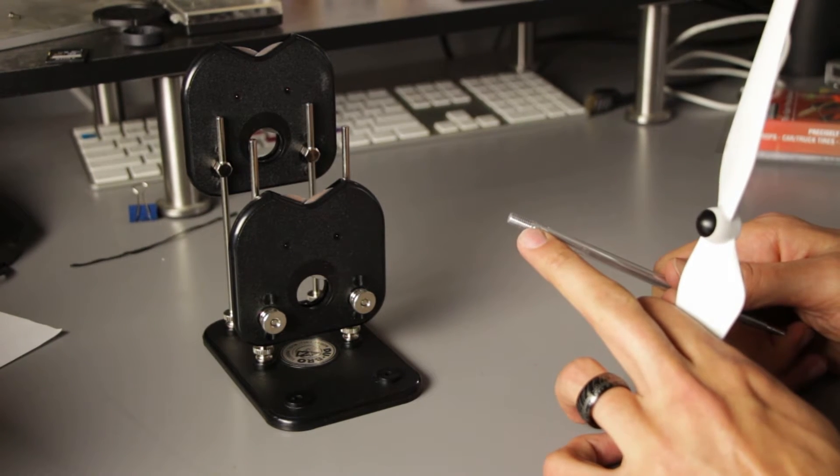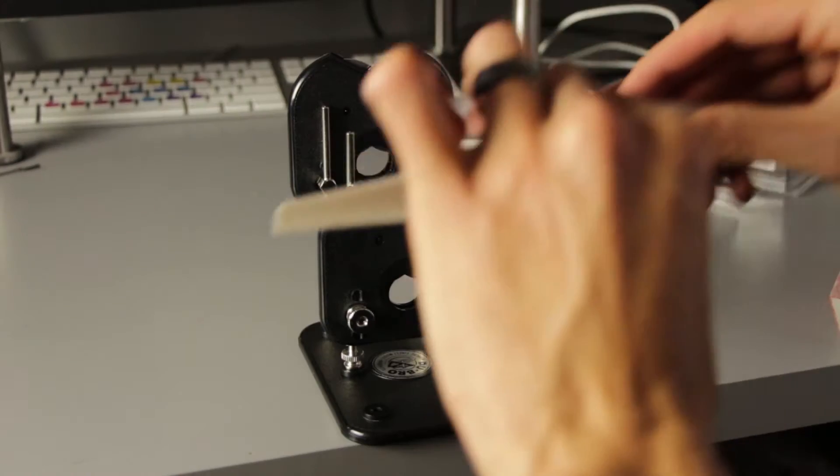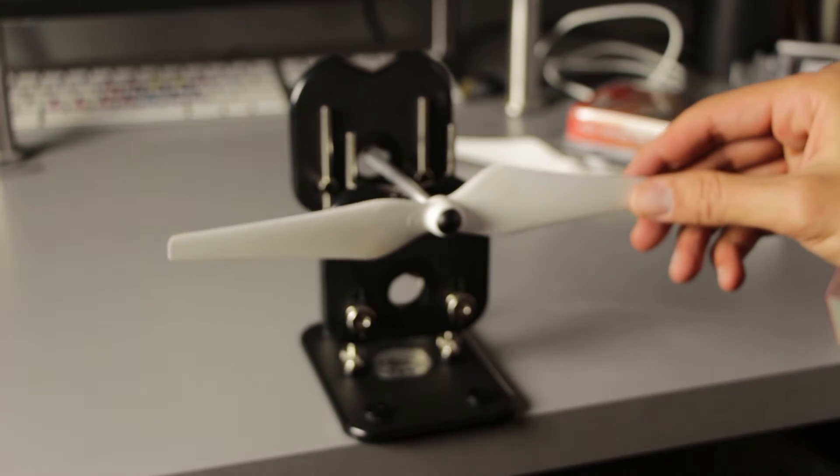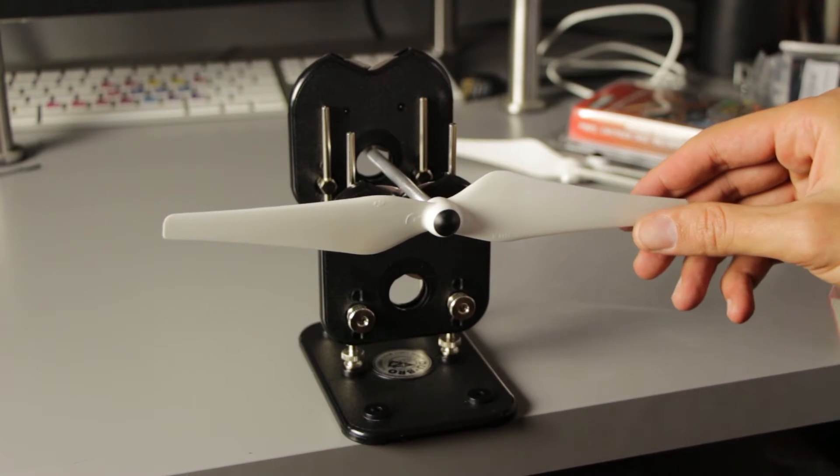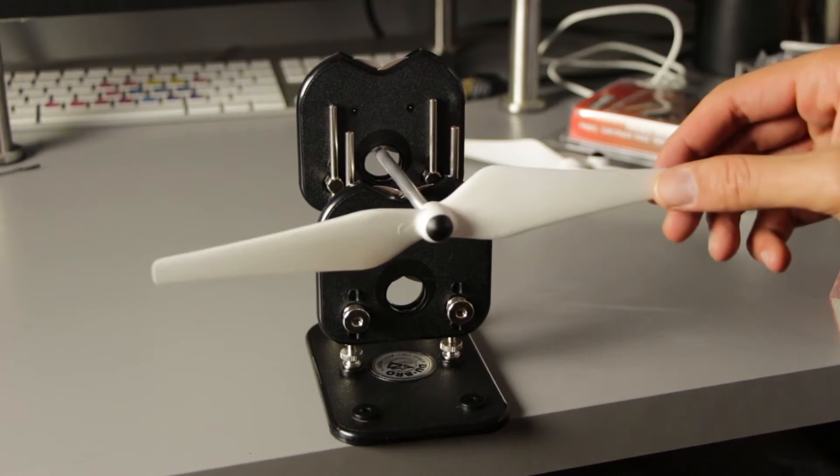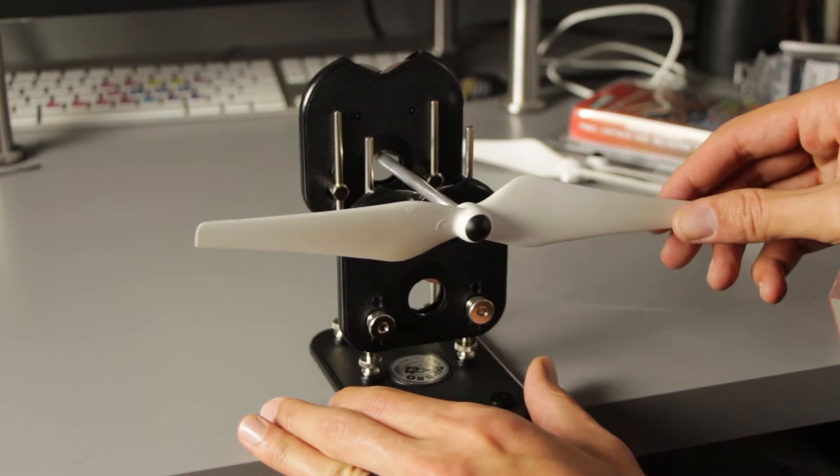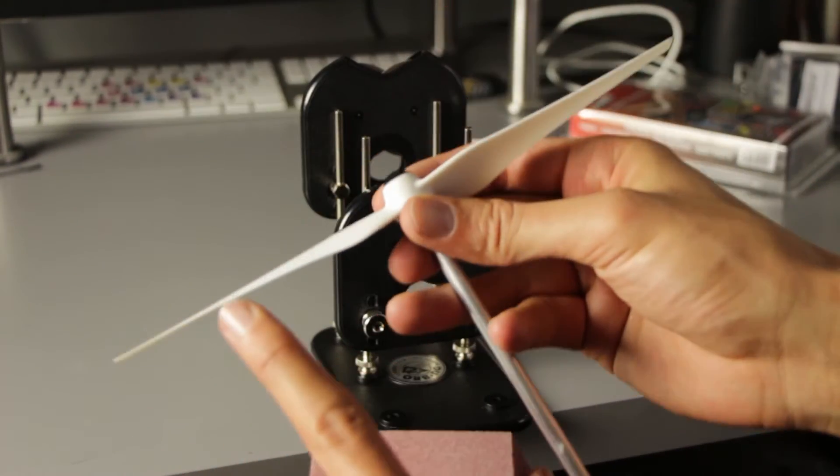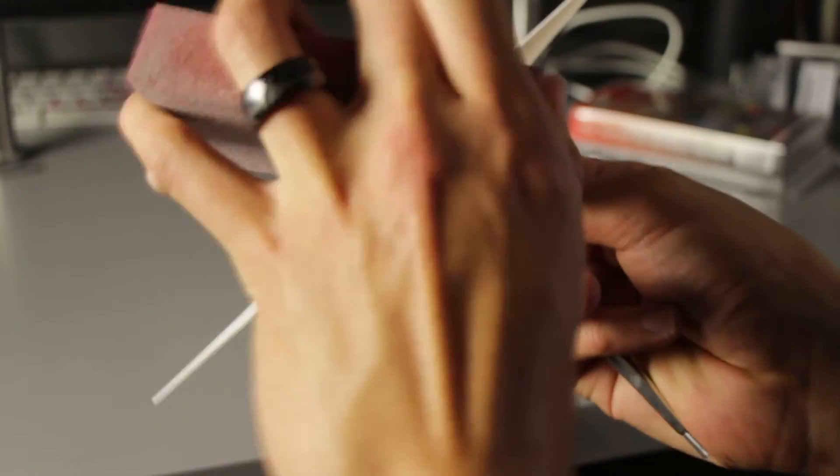The first way you want to test is the horizontal levelness and balance of the prop. As you can see here, the prop will dip to one side. That means we know that that side is heavier than the other side, so what we need to do is sand that side down slightly in order to achieve a horizontal balance between the two. We can do that by using a very fine sandpaper, a 120 grit maybe a 180 grit, and you want to sand down the backside of the base of the prop.